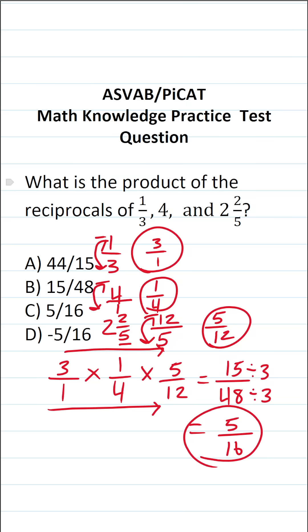So the product of the reciprocals of one-third, four and two and two-fifths is C, five over 16.